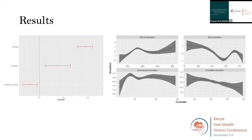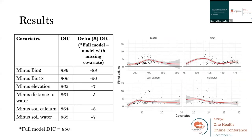The table on the left shows the DIC values of the full model and versions where a single covariate was removed each time. Mean diurnal temperature range (bio2) had the strongest effect — removing it increased the DIC by 83. Bio18 (precipitation of the warmest quarter) also had a strong effect; anthrax incidence increased with increasing precipitation up to about 400 mm, then reduced. Soil calcium had a positive effect on anthrax incidence initially, but this wore off as values increased beyond 10. Soil water had mostly a negative effect on anthrax incidence.